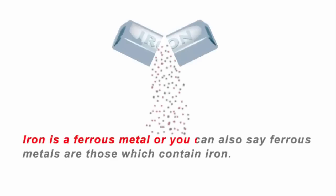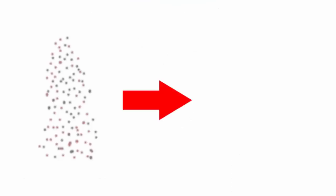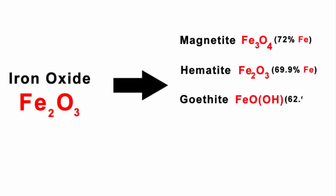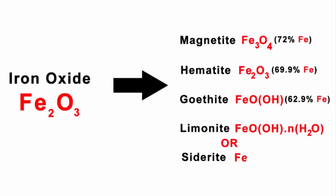Iron is a ferrous metal, or you can also say ferrous metals are those which contain iron. The ores are usually rich in iron oxides. Iron is usually found in the form of magnetite, hematite, goethite, limonite, or sidurite.